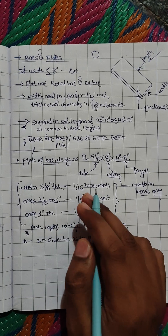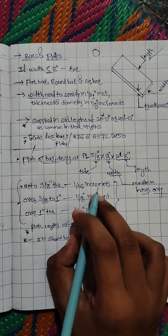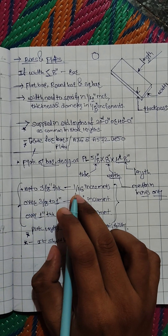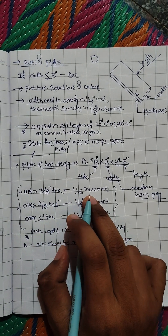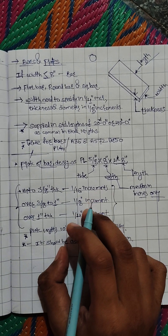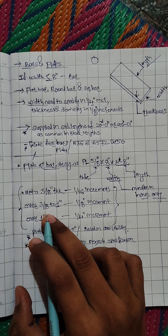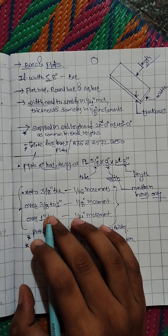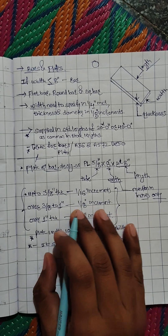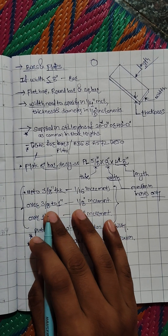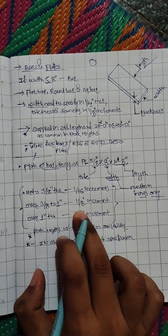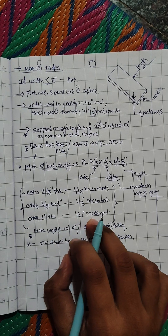This is important when specifying the increments of plates. Up to 3/8 inch thick, we need to specify increments in 1/16 only — like 1/16, 1/8, 3/16. Above 3/8 and up to 1 inch, we use 1/8 inch increments, so 3/8, half inch — don't go to 9/16, keep it to 1/2 like that. Above 1 inch thick, we specify the plate thickness in 1/4 inch increments.